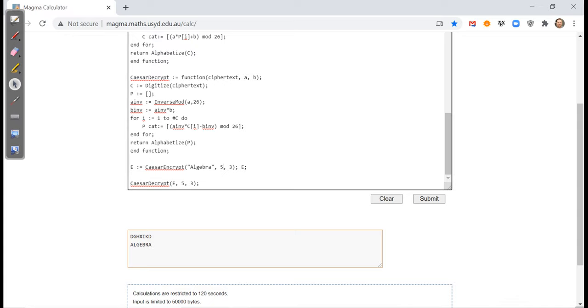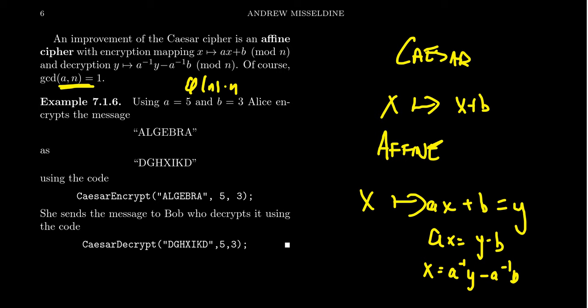You can pick a different key if you want to. So it's going to be much more secure than the Caesar cipher. Now, I should mention that the affine cipher in terms of professional grade cryptography, of course, it's going to be still pretty elementary there.